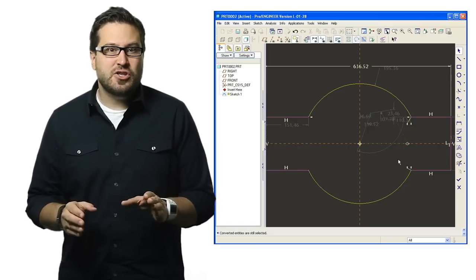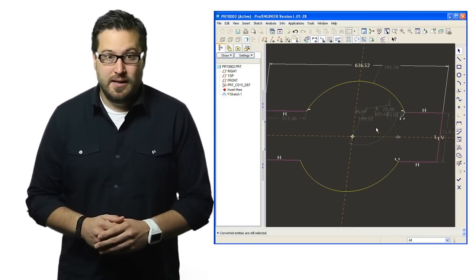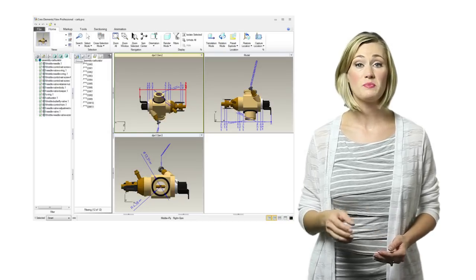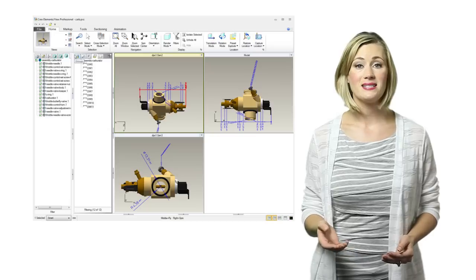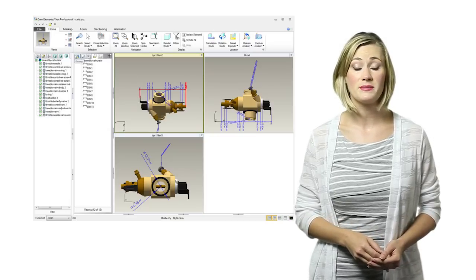If we jump up another level where sketches have become solid features, we see the same strength repeated. As features are built up to create the shape of the model, each piece of geometry can be related to the ones that preceded it. As these features accumulate, more relations are created and a stronger model is built.